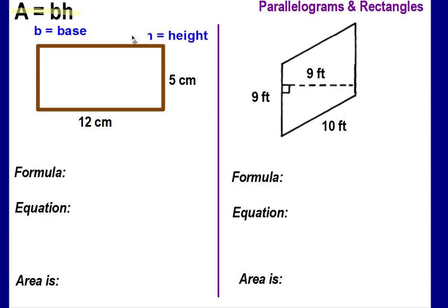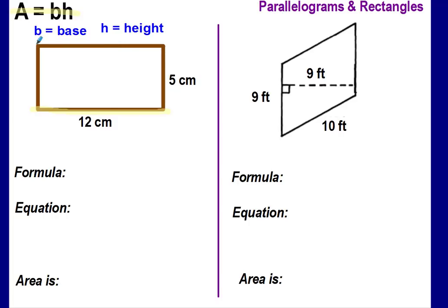The base is like the bottom of your figure. In our rectangle, the base is what it's sitting on — it is a straight line. In a rectangle, there's a top and a bottom, like a floor and a ceiling, where the opposite sides are going to be equal — they're congruent. So if this side is 12, then the opposite side, which is parallel to it, is also 12.